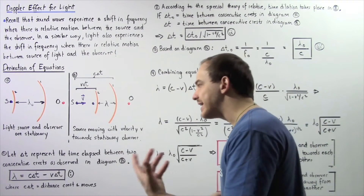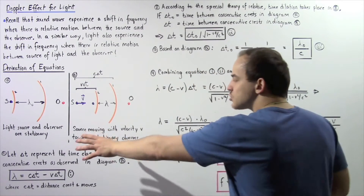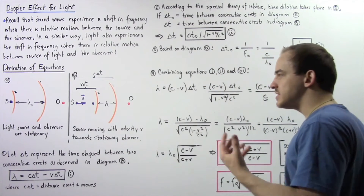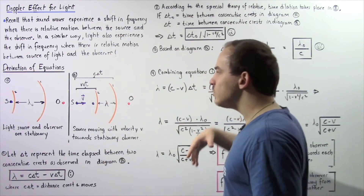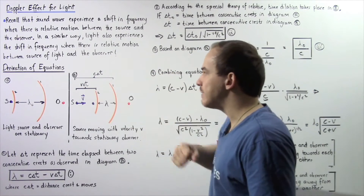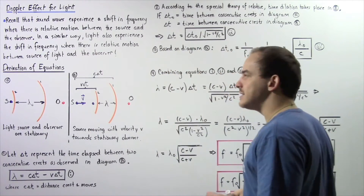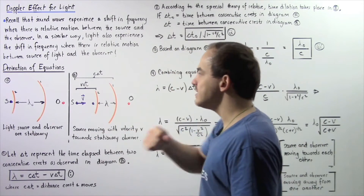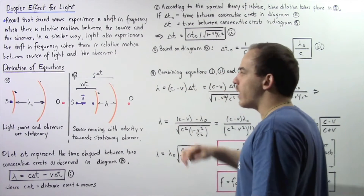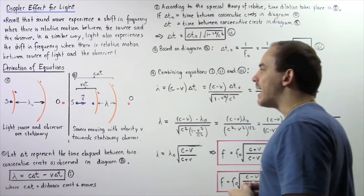In Diagram B, we have a slightly different case — there is relative motion towards the source and the observer. The source is moving with velocity towards the stationary observer. At some initial time T0, the source emits a light wave given by crest 1. Crest 1 moves a distance C multiplied by delta T over time interval delta T. At the same time, the source moves a distance V times delta T, then releases a second light wave given by crest 2. The distance between these two crests in Diagram B is given by lambda.